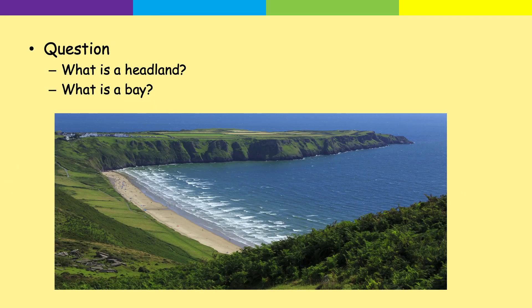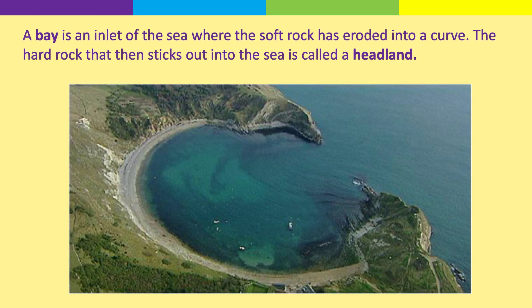Next task: use the image on the board. What do you think a headland is? What do you think a bay is? The image is a hint. Pause the video, give yourself two minutes. A bay is an inlet of the sea where the soft rock has eroded into a curve. The hard rock that sticks out into the sea is called the headland. If you haven't got those definitions, write them out now.